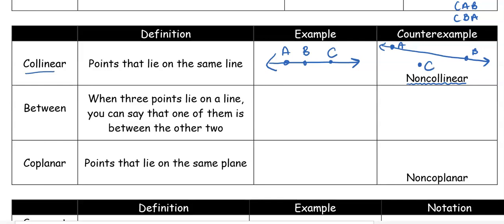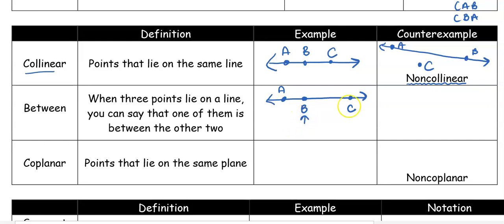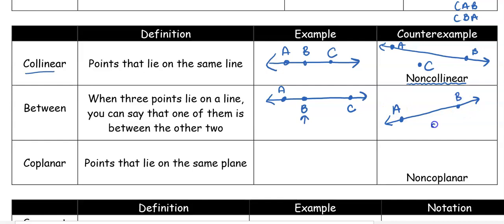Between is a vocab word we sometimes misuse. Between means that when three points lie on the same line, one of them is in between the other two. We sometimes misuse it by saying it's exactly halfway in between — that's not the same thing. Between just means somewhere in between: here's A, here's C, and B is between A and C, but that doesn't mean it's the midpoint. A counter-example: if C is not on the same line, C cannot be between, because to be between the points must be collinear.